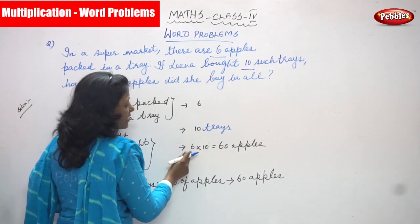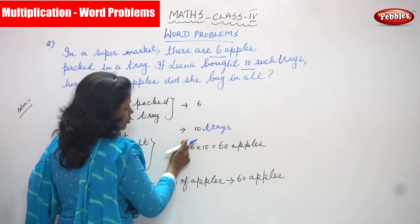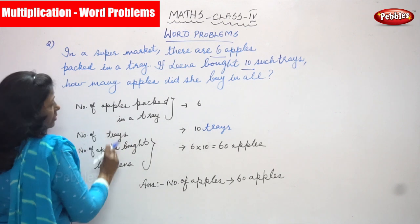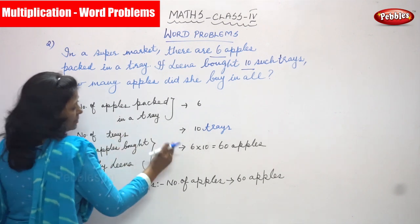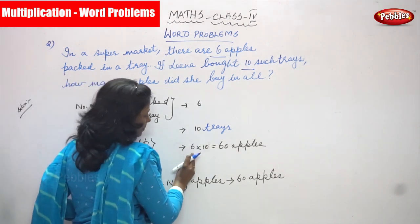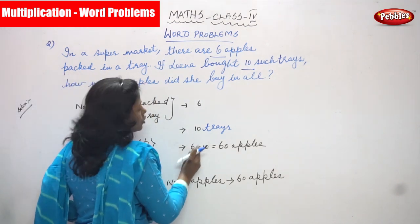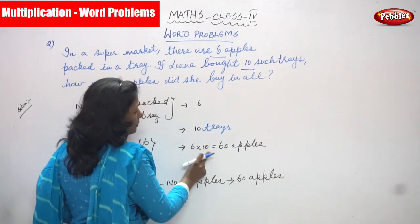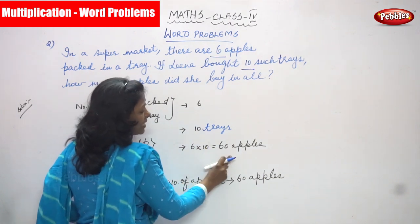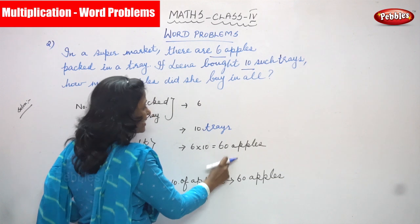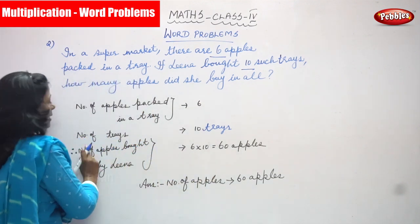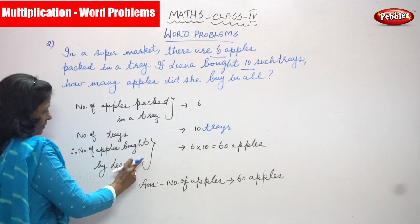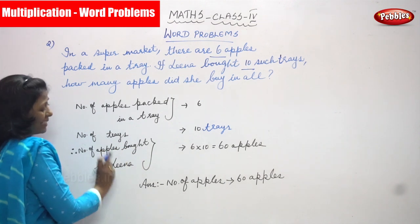So therefore, the number of apples bought by Lena means six into ten. That means in each tray six apples are packed, and the number of trays is ten, so you have to multiply six into ten. You can get sixty apples.